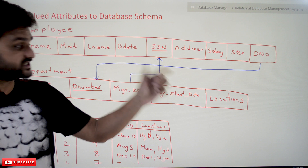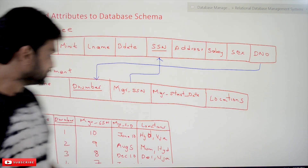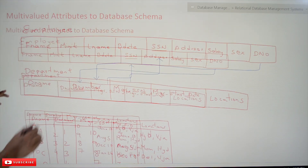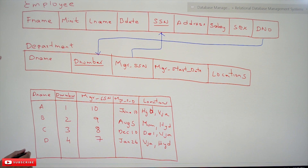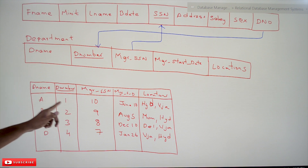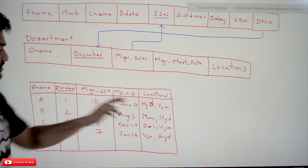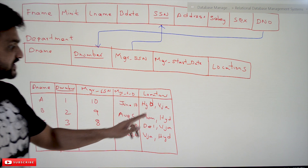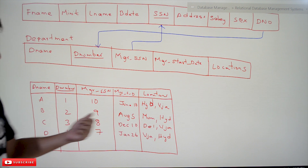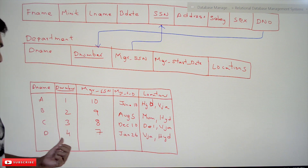In the requirements it is given that every department will be in multiple locations, so that statement itself states that this is going to have multiple locations. To have better understanding, this is how the data is going to look: department number one has locations Hyderabad and Vijayawada; department two is located in Mumbai, Hyderabad, Delhi, and Vijayawada; and department four is located in Vijayawada and Hyderabad.